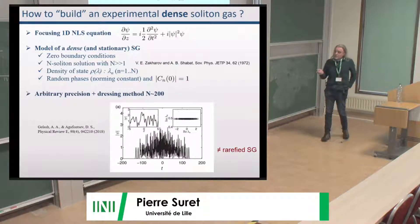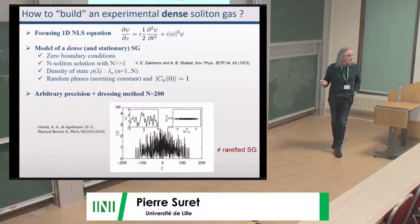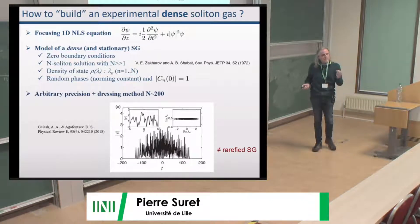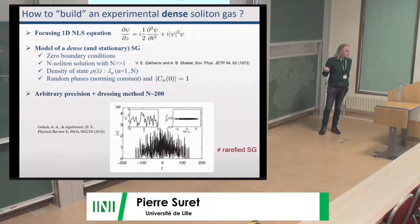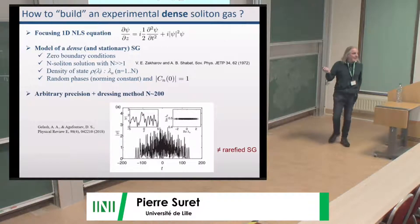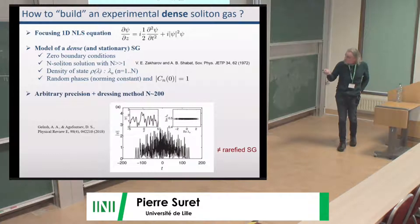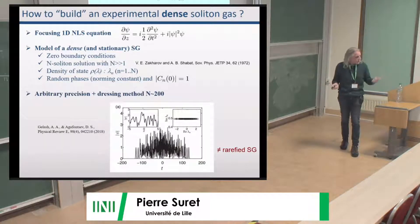The approach I use is the N-soliton solution of the nonlinear Schrödinger equation, known for 50 years. Surprisingly, it was only a few years ago that it became possible to compute them numerically, because there are serious accuracy problems with the raw formulas. Using arbitrary precision techniques and the dressing method, Gelash and Agafontsev showed it is possible to build exact N-soliton solutions with hundreds of solitons. This is a large wave packet built with 200 solitons, but you cannot distinguish them individually.